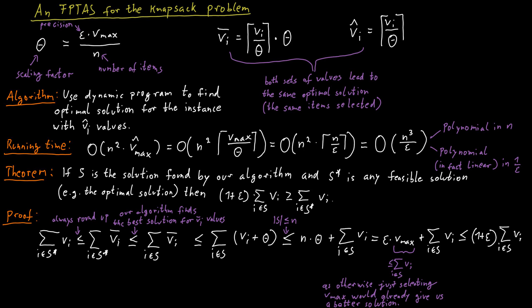So this is a general idea. If the reason why your dynamic program is not polynomial is just because you have big numbers in your input, you can hope to get something like a PTAS or an FPTAS by simply trying to make all the numbers in your input smaller by rounding them in some way and then run your dynamic program, which will now be efficient. The only thing you have to do is you have to control the errors somehow that you introduce because you're rounding the numbers.